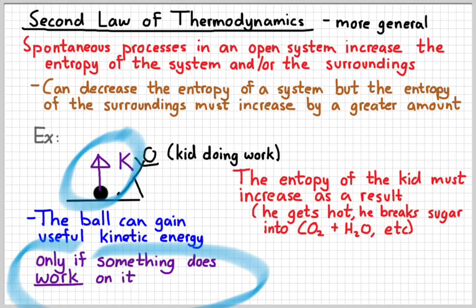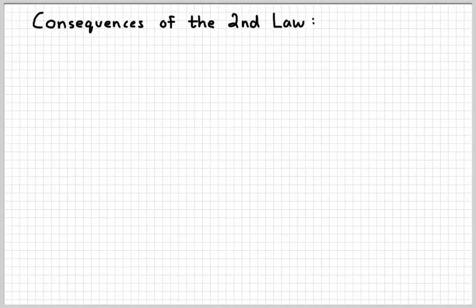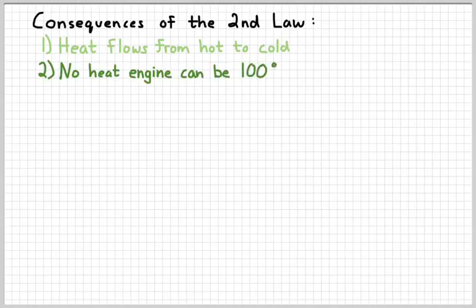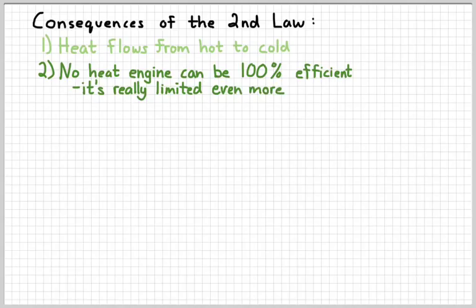So there are three consequences of the second law of thermodynamics we need to understand. The first is that heat naturally flows from hot to cold. Going backwards would cause a decrease in entropy, which does not happen on its own. The second is that no heat engine can be 100% efficient. In reality, the second law of thermodynamics limits it even more than just saying it can't be 100% efficient. For example, thermodynamics says your car engine is never going to be more efficient than about 33%, if I remember correctly. That's a fundamental law of nature. That's what the second law of thermodynamics tells us.